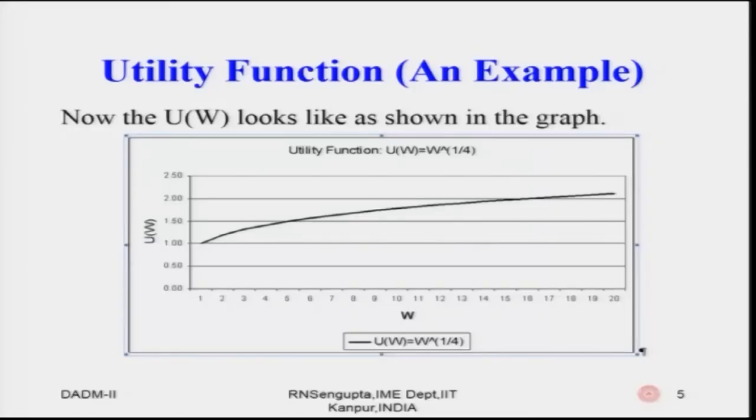Once we draw it, the utility function W to the power 0.25 (or W to the power one-fourth) is shown here. I have not drawn the functional forms of A, A prime, R, R prime for the other four utility functions — quadratic, power, exponential, and logarithmic — because it becomes too cluttered. You can use Excel to draw them separately to understand the properties of R, R prime, A, A prime.